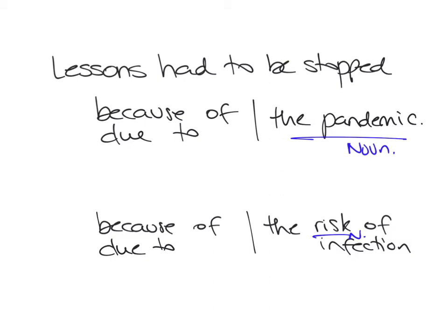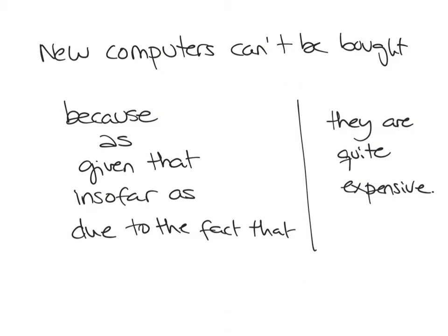On the other hand, if the reason you're going to give includes a subject and a verb — that is, a full subordinate clause — what you would use are some of these options. You could say: 'New computers can't be bought because they are quite expensive,' or 'as they are quite expensive,' or 'given that they are quite expensive,' or 'insofar as they are quite expensive.'